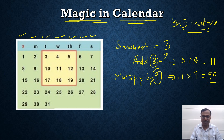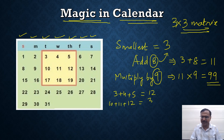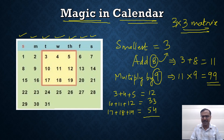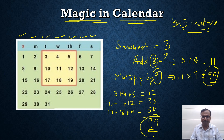Let's add all the numbers I have put in the square. First row: 3 plus 4 plus 5 equals 12. Second row: 10 plus 11 plus 12 equals 33. Third row: 17 plus 18 plus 19 equals 54. Let's add all 9 numbers together — that gives us 99. Oh my god, I got the same number as the sum of all 9 numbers!